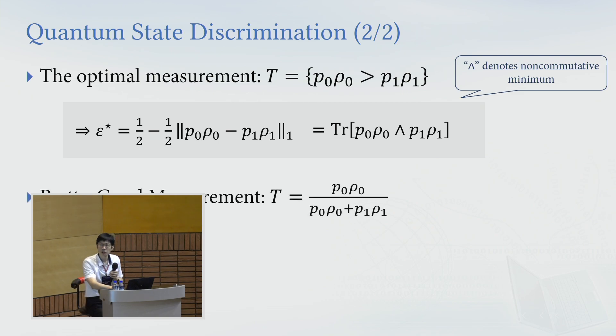Also in 2003, Barnum and Knill show some nice properties for the pretty good measurement, which is defined by this test: T0 times rho zero, divided over the sum of the operators.